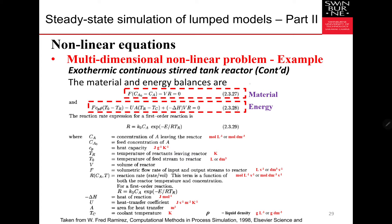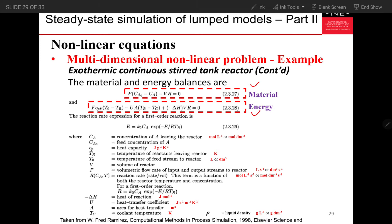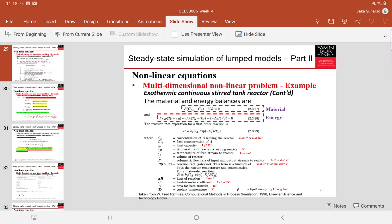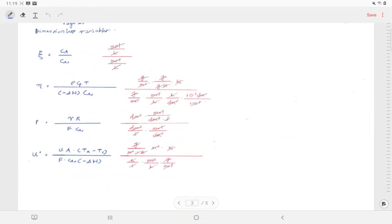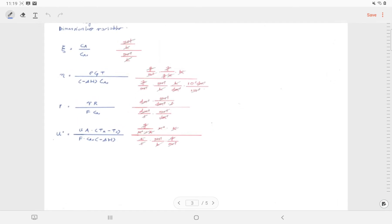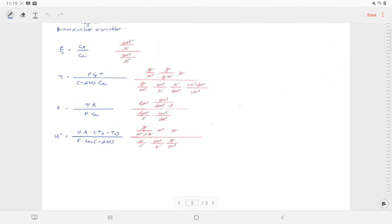We make the material and energy balances. The details are given in the additional materials which show much better derivations. Here we introduce dimensionless variables to make the problem easier to solve: dimensionless concentration, dimensionless temperature, and two other dimensionless variables. We need to check that units cancel — that's why they're called dimensionless, because they carry no dimension.